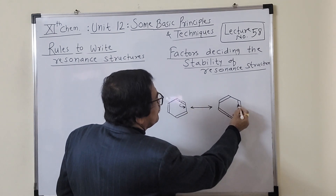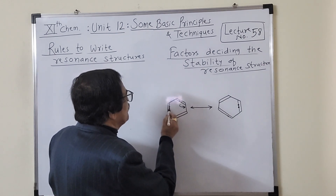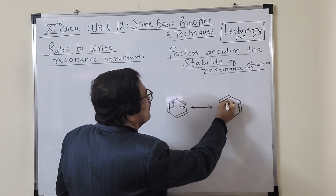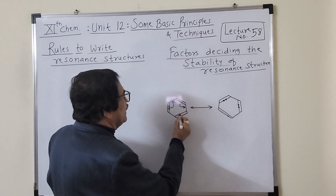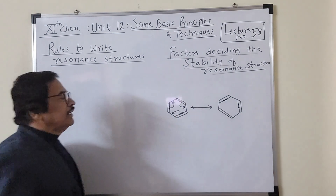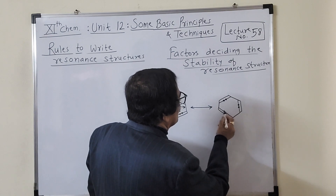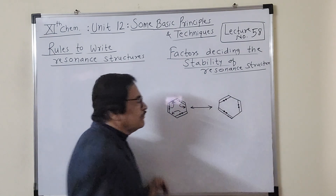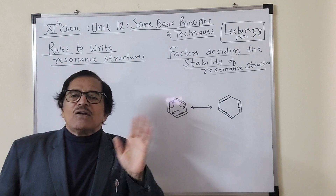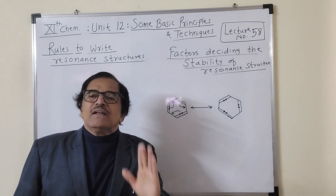When the pi electron pair is transferred to the next position, the double bond comes here; and when this pi bond electron pair is transferred further, it comes here again. So what change are you watching? Now, tell me — are they isomers? One confusion might arise, but they are not isomers. They are just different electronic structures.